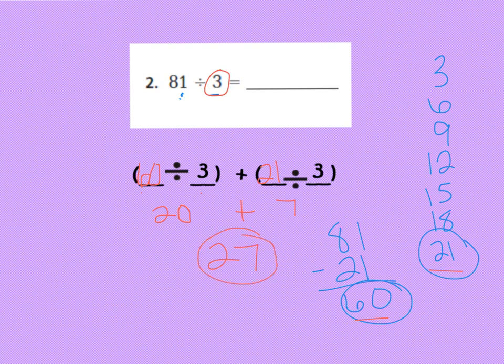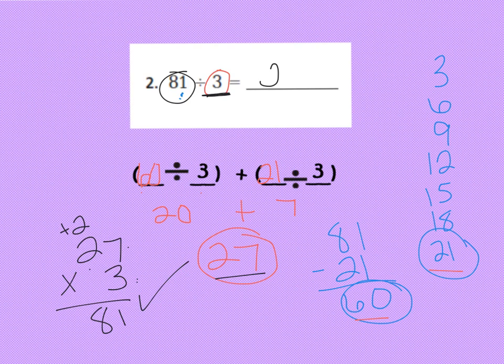But before I finish, I need to check my work using multiplication. I'm going to take my quotient, which is 27, and multiply it by the divisor, which is 3. 27 times 3. If I'm correct, I should get the dividend, 81. 7 times 3 is 21, and 3 times 2 is 6, plus 2 is 8. So I am correct. My quotient is 27.